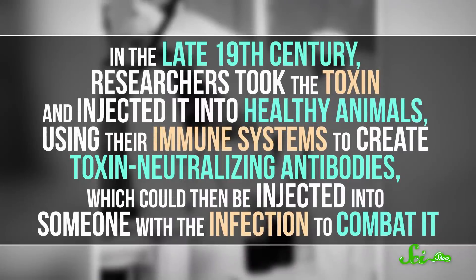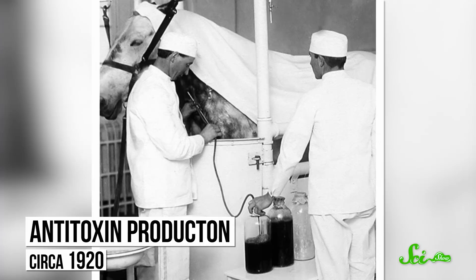But in the late 19th century, researchers took the toxin and injected it into healthy animals, using their immune systems to create toxin-neutralizing antibodies which could then be injected into someone with the infection to combat it. This serum therapy proved to be pretty effective, and by 1895 companies were cranking out the antitoxin in bulk. But this method was still a treatment, not a way to prevent new cases.